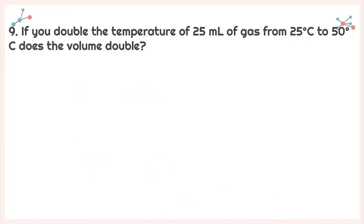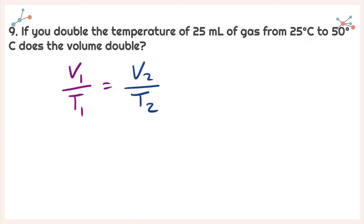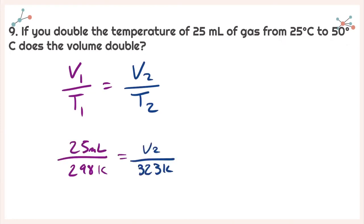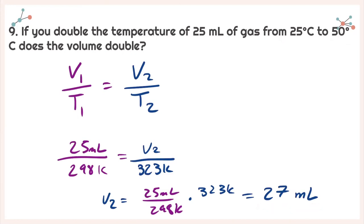For number nine, it says if you double the temperature of 25 milliliters of gas from 25 degrees Celsius to 50 degrees Celsius, does the volume double? Let's check — converting both 25 degrees and 50 degrees from Celsius to Kelvin, and using the same equation V1 over T1 equals V2 over T2 with my values plugged in, I need to solve for V2. Solving for V2 and plugging everything into my calculator, I get a volume of 27 milliliters. That's strange — I doubled my temperature, but why didn't my volume double?